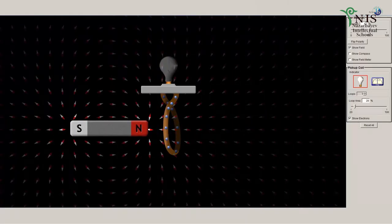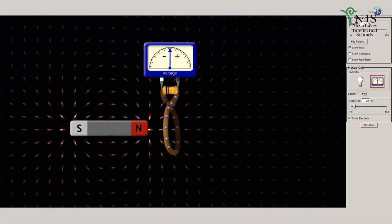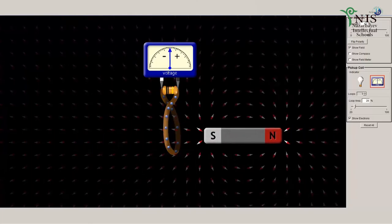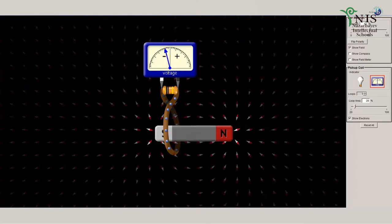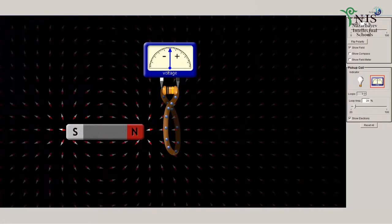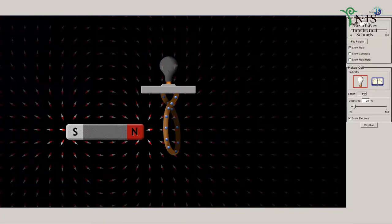If we move the coil towards the magnet, we again find a reading on the voltmeter. And as we move it faster, we can observe a greater voltage difference. This indicates that it is the relative motion of the coil and magnet that is responsible for the effect.